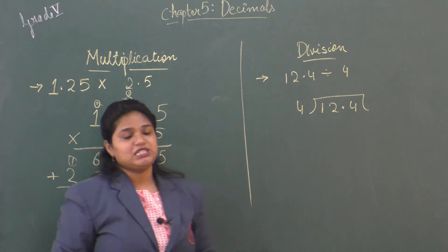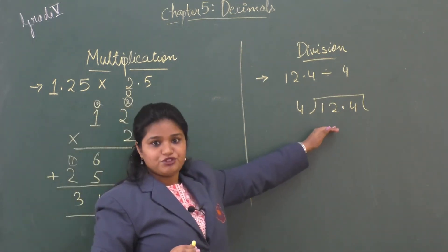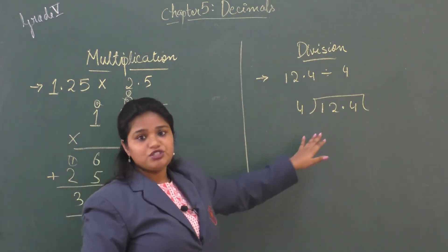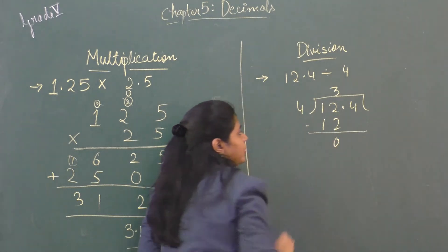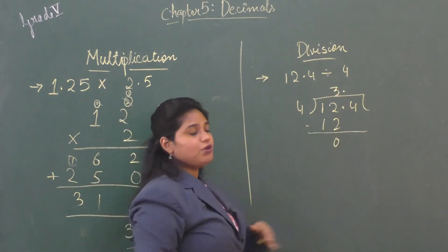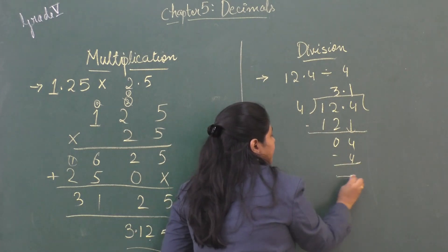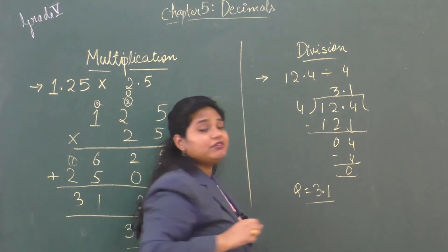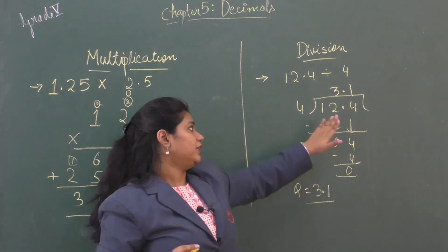Division example: 12.4 ÷ 4. Arrange in normal division format with 4 as divisor and 12.4 as dividend. Start normal division: 4 into 12 is 3, write 3 and subtract to get remainder 0. When you reach the decimal point, place the decimal point in the quotient directly above it, then bring down 4. 4 into 4 is 1, remainder 0. The quotient is 3.1. Always be careful to place the decimal point in the quotient right above the decimal point in the dividend.